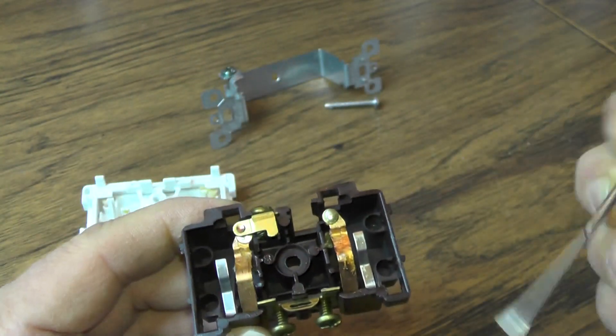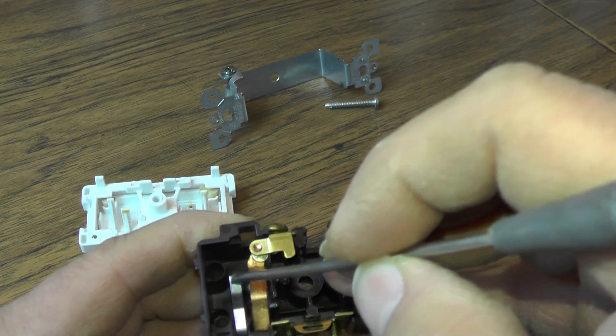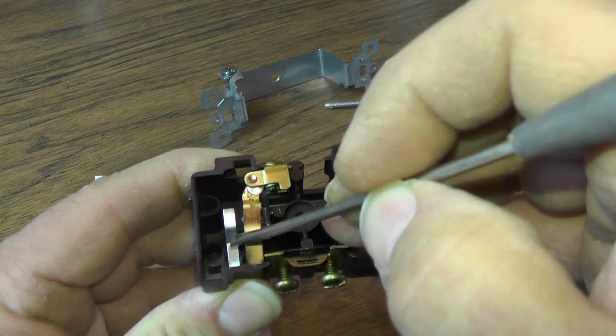But this silver detent is what keeps the switch in place. So when you move the switch left and right, it acts on this detent that actually keeps it turned on or off.